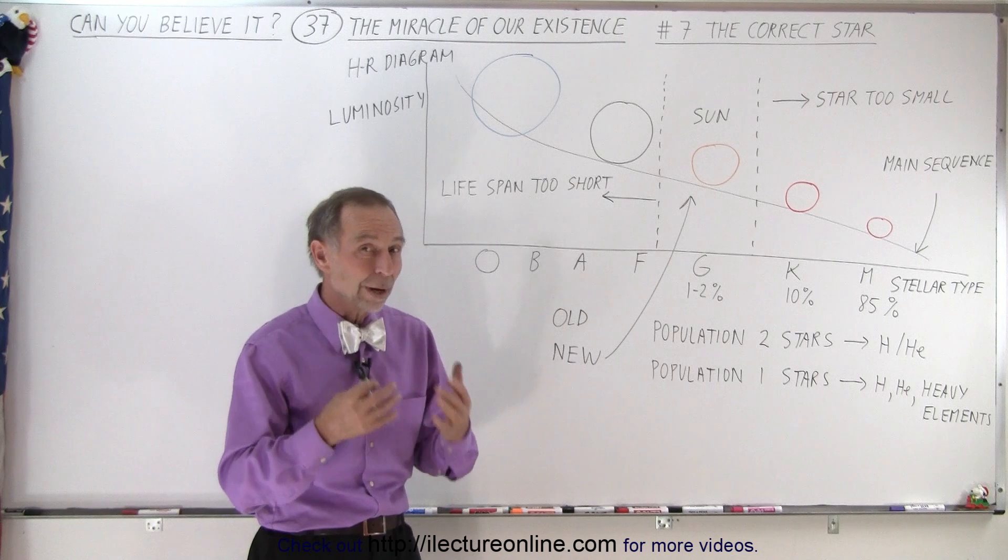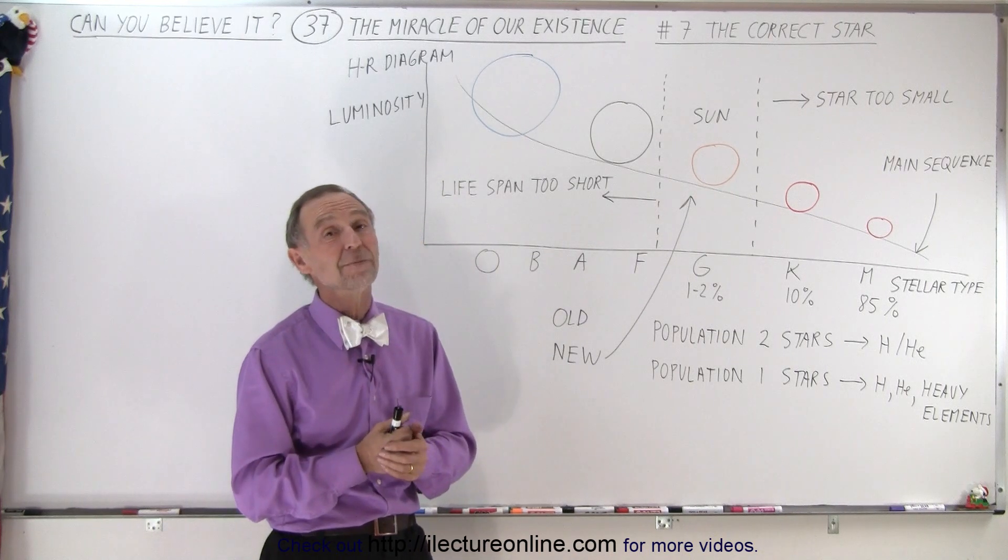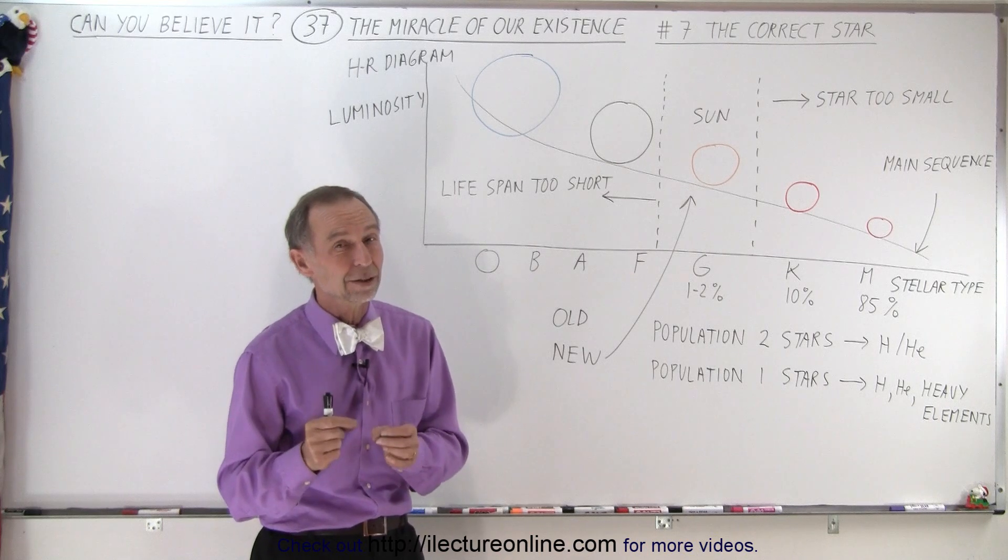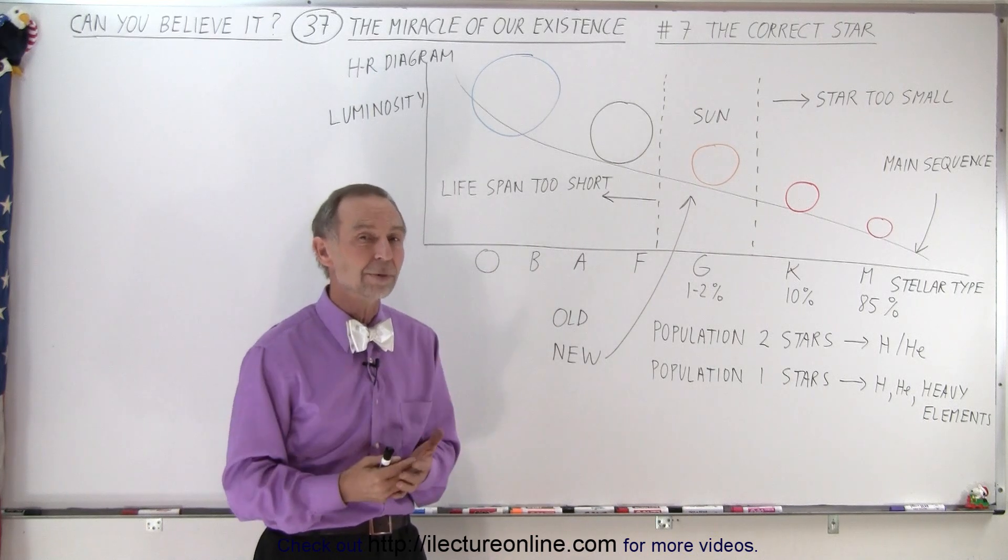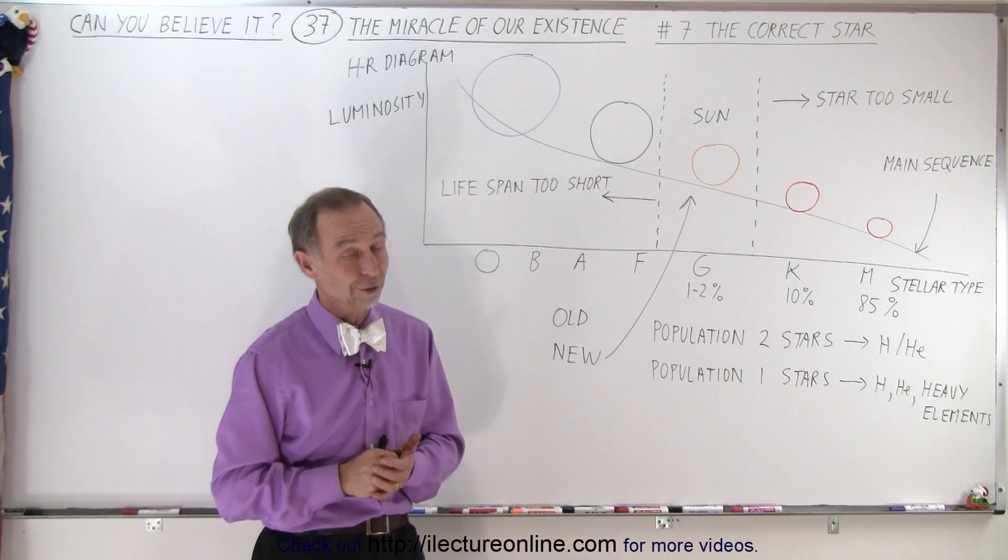The right planet, near the right star, at the right distance, it's beginning to become very difficult to find a planet that will have all those conditions for life to be able to exist. And therefore, Earth is a very unique planet so far.